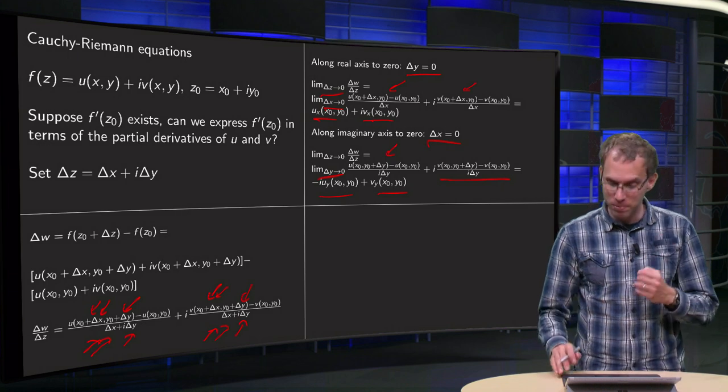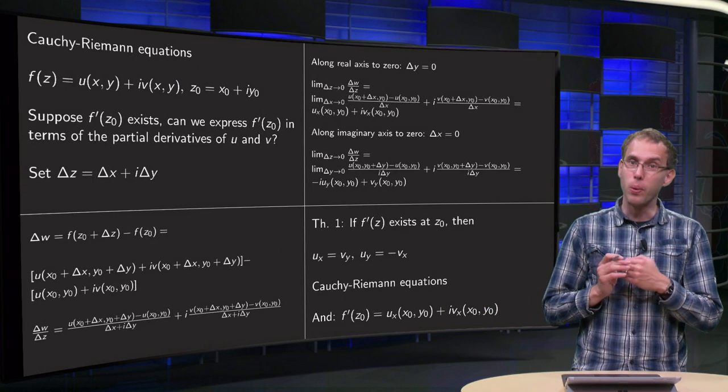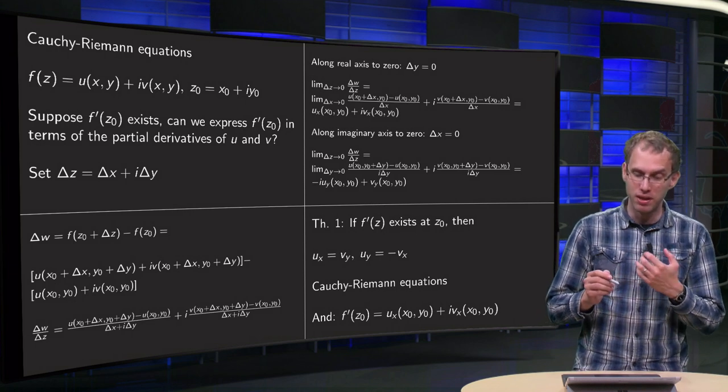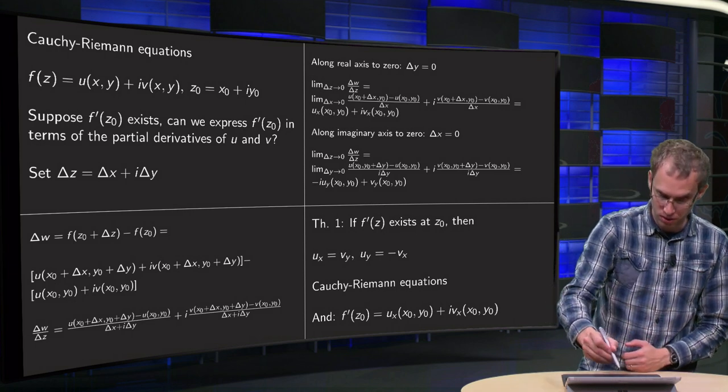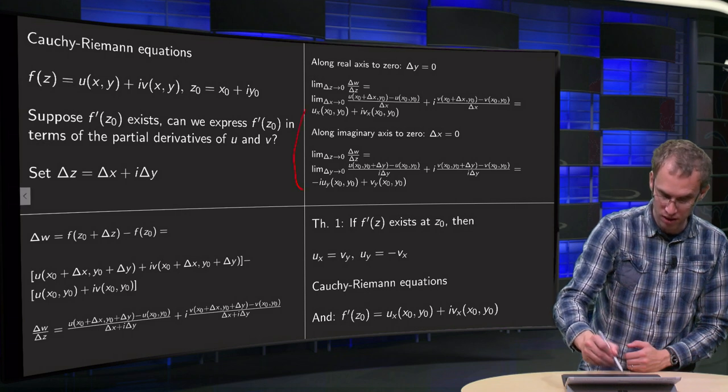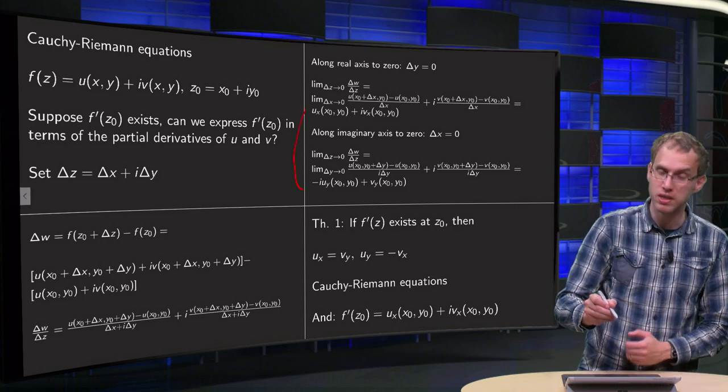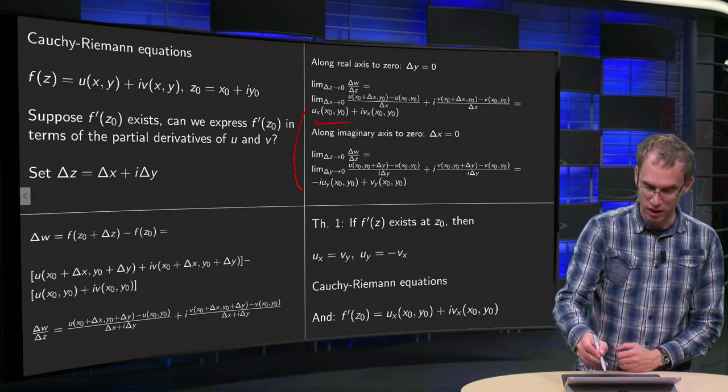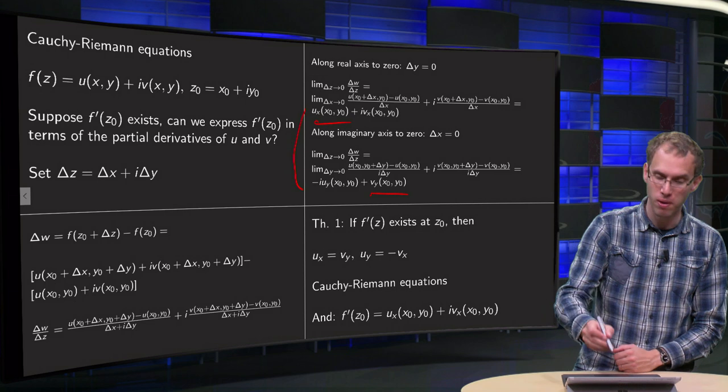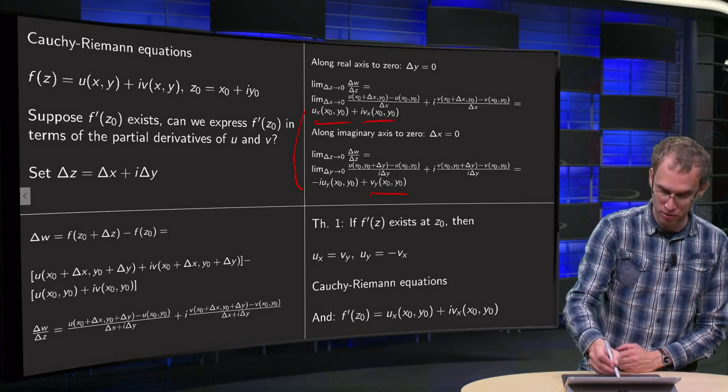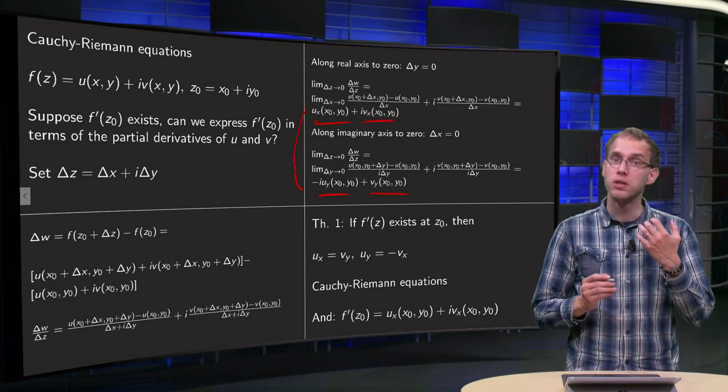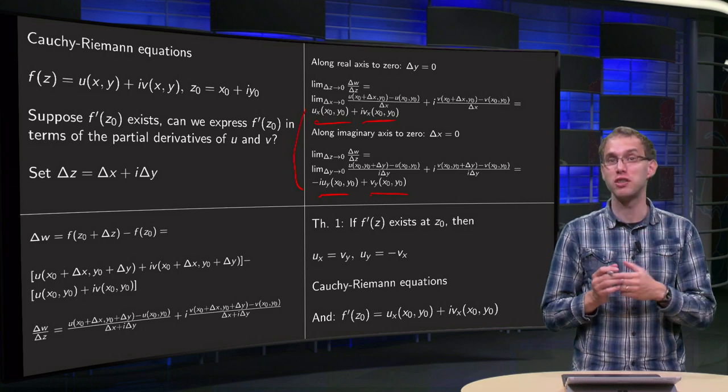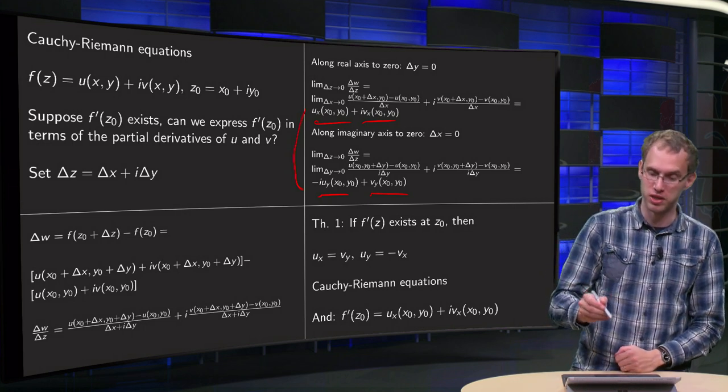Now we assumed that this limit exists which means that we need these expressions here to be equal. So that means that if f is differentiable then uₓ has to be equal to vᵧ, real parts have to be equal and vₓ has to be equal to minus uᵧ. That's what we certainly need to be satisfied if f is differentiable at z₀.